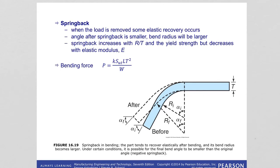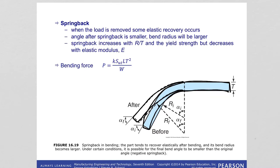What is springback? Think about if you try to bend aluminum foil — there is some part of it that will be recovered. There is this elastic deformation amount that will be recovered, and your material is bent in a certain manner but this includes some elastic deformation which will recover. This is called springback — recovery of elastic deformation — and this has to be accounted for during bending.